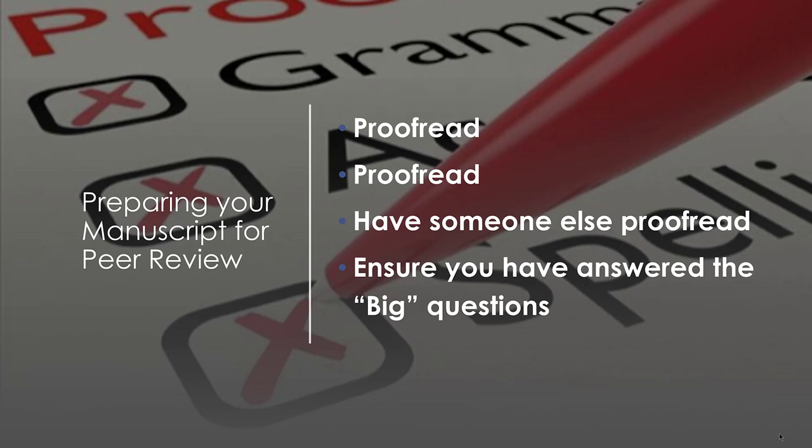In terms of preparing your manuscript for the peer review process, there are some things you should do before submitting. First, you should proofread your manuscript — and then proofread it again, and have someone else proofread it as well. Proofreading is crucial at this stage. Failure to proofread your manuscript is one of the most important reasons why manuscripts are rejected for publication. Proofreading will help ensure that the presentation of your work best represents your abilities as a scholar.